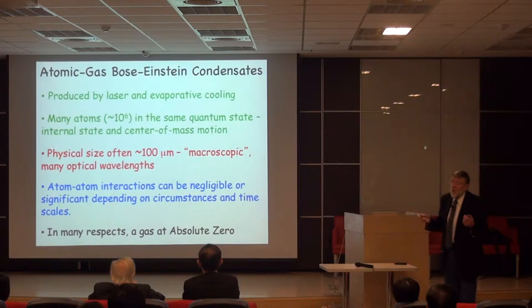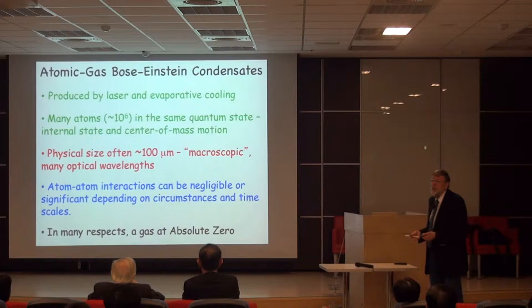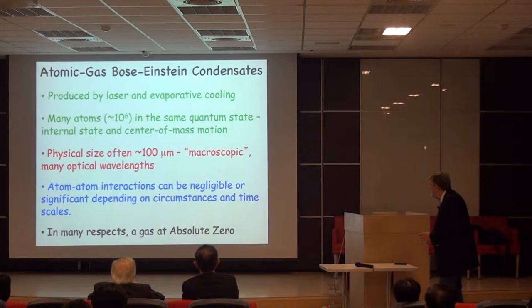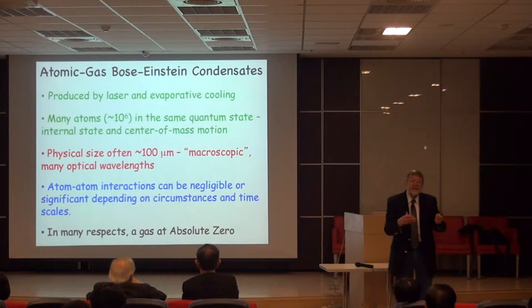Bose-Einstein condensates are produced by a combination of laser cooling and evaporative cooling. Typical experiments have on the order of a million atoms, though experiments range from a few hundred to hundreds of millions. The physical size is often around 100 microns, which is macroscopic — in the sense that it spans many optical wavelengths, with optical wavelengths typically around half a micron.